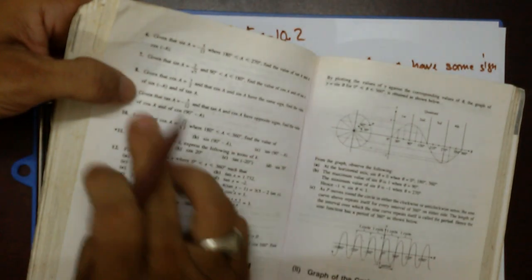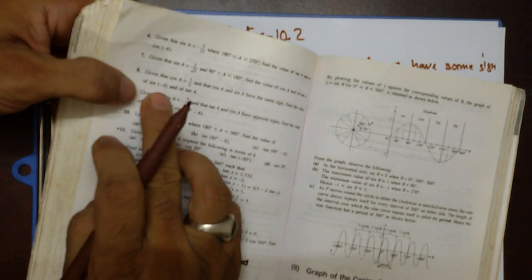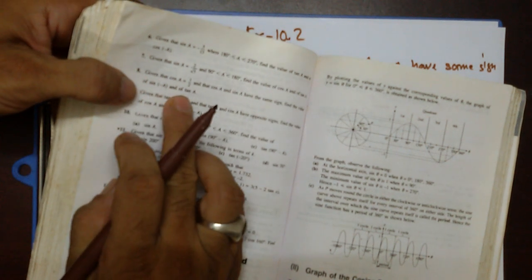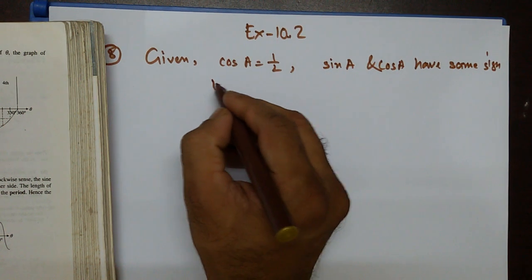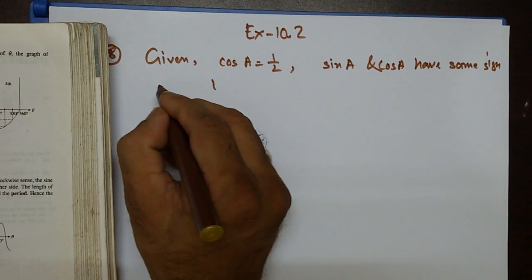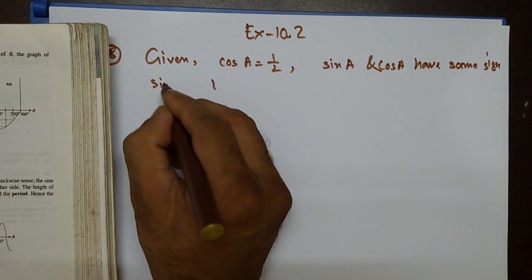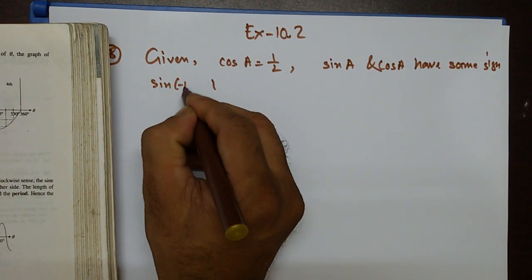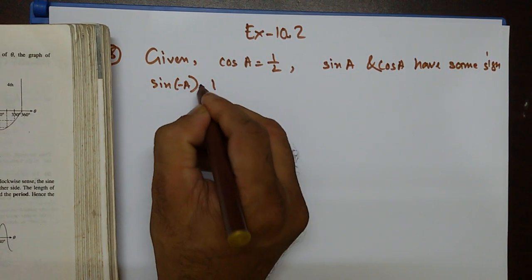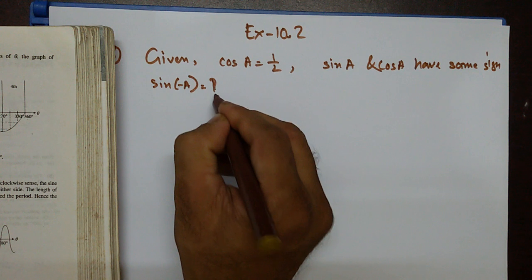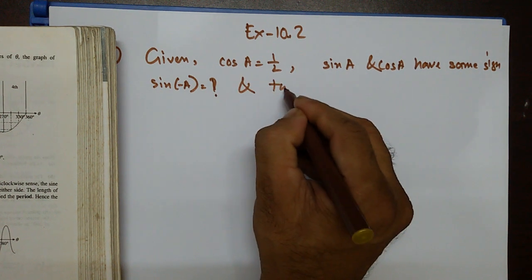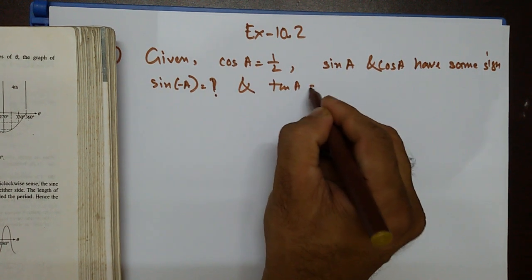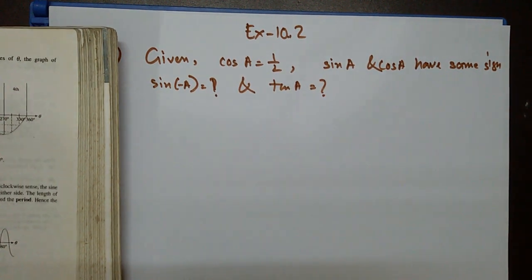They're asking us to find out sine negative a and tan a. So they're asking: sine negative a equals what, and tan a equals what?